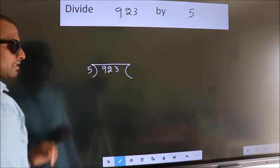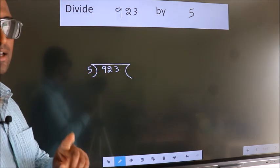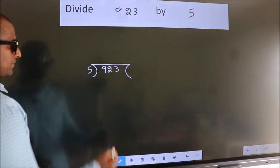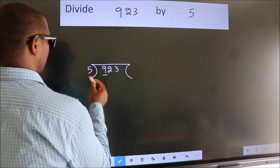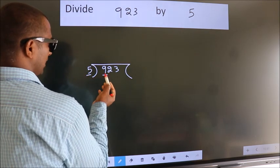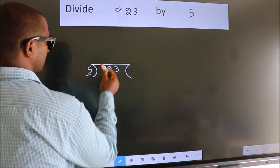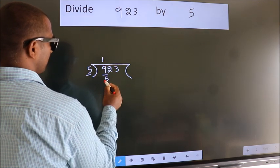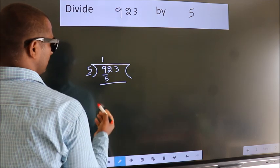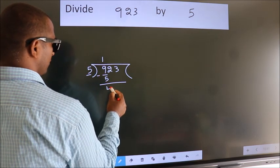This is your step 1. Next, here we have 9, here 5. A number close to 9 in the 5 times table is 1 times 5. Now, we should subtract. We get 4.